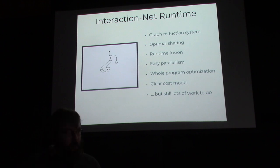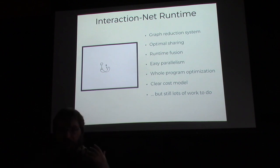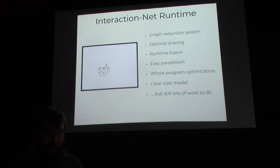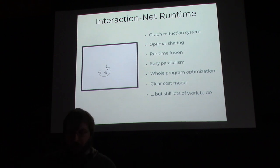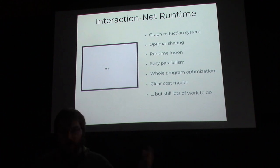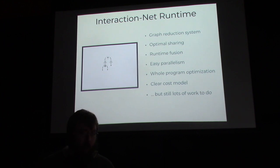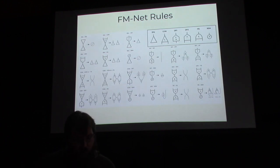Our idea: if we restrict ourselves to a terminating language, all those problems with interaction nets go away. We have the possibility to take advantage of really nice properties — like being able to run this in parallel, because it's a graph reduction model. The same kinds of parallelism as in other graph models like the Haskell STG machine, and in some cases even better, because you can do sharing between different parts of your graph more powerfully.